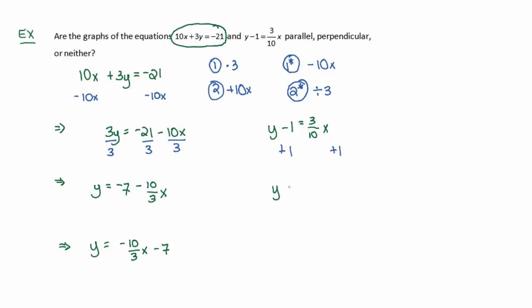And you get that y by itself equals 3/10 x + 1. To determine whether these lines are parallel or perpendicular or neither, we're going to zoom in on their slopes. The slope of that second equation is 3/10. The slope of the first equation is -10/3. Those are definitely not the same slopes, so they're not parallel.